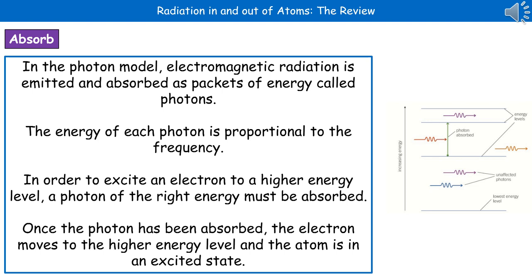In our previous physics work, we've looked at the ray model and wave model for electromagnetic radiation. But we do have a third model called the photon model. In the photon model, electromagnetic radiation is emitted and absorbed as packets of energy called photons, hence the name. The energy of each photon is proportional to the frequency.